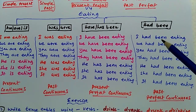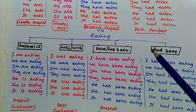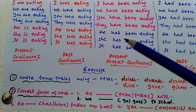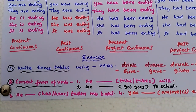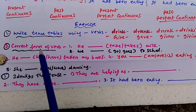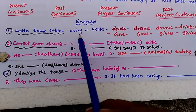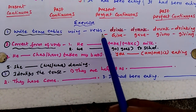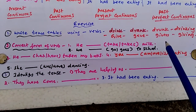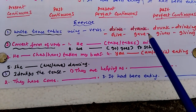After making the children learn to write these tense tables, we can put an exercise before them. Let us do an exercise: write tense tables using the conjugation of verbs like drink, drank, drunk, drinking; and give, gave, given, giving. With these verbs, write tense tables.